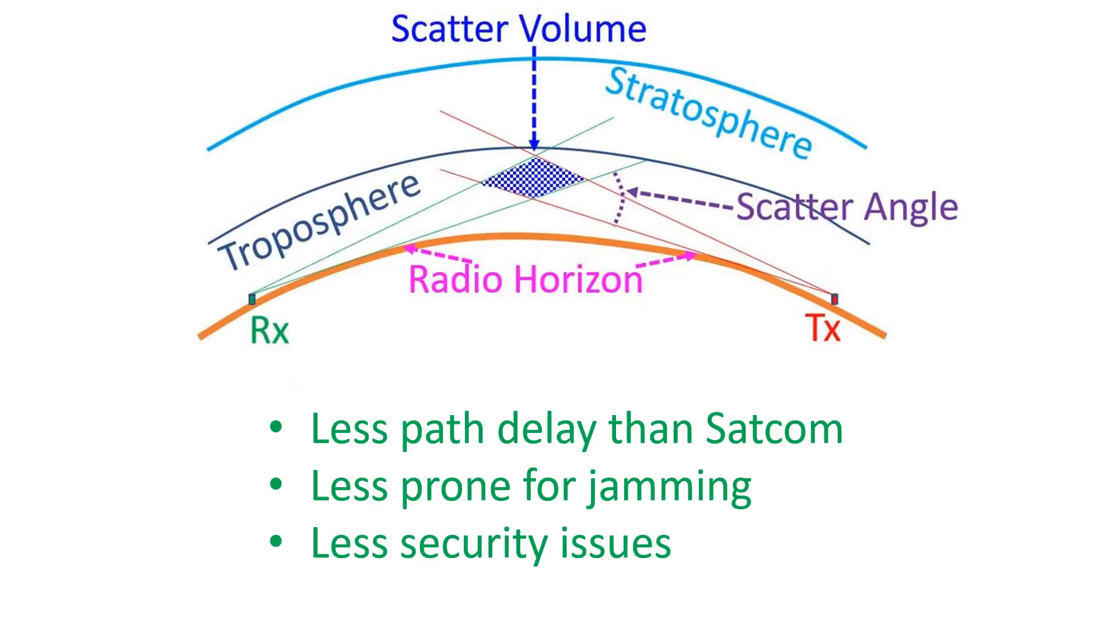The angle between the two radio horizon rays from the communicating radios is known as the scatter angle. Scatter volume will be high for a low gain antenna with a wider beam width and lower for a high gain antenna with a narrower beam.